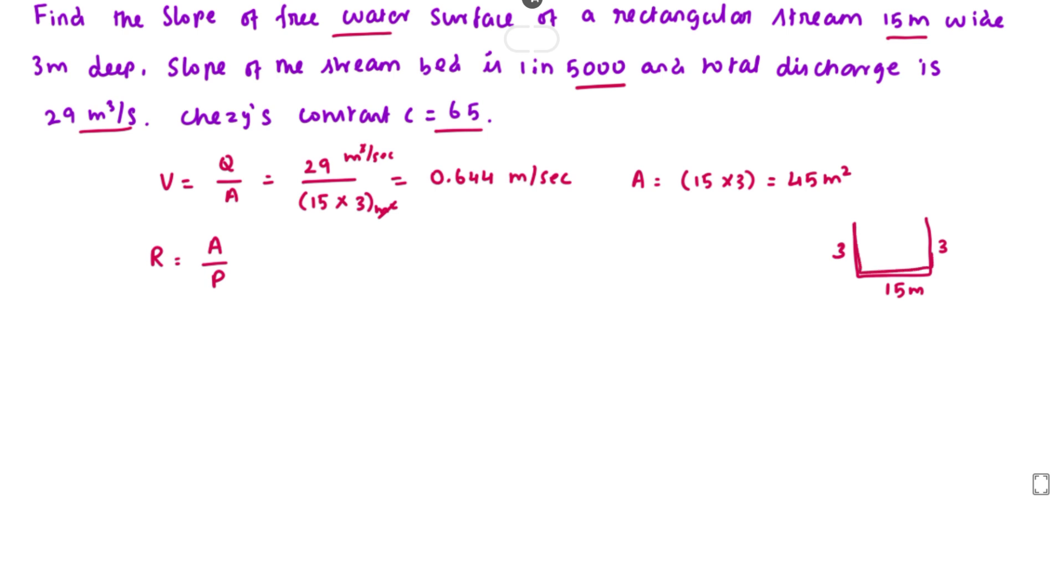The perimeter is 3 plus 15 plus 3 equals 21. So R equals area 45 divided by perimeter 21, solving this we get 2.143 meters.